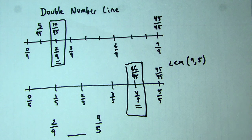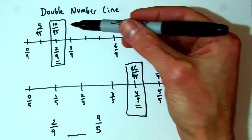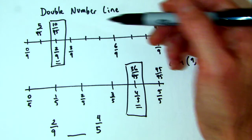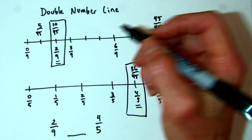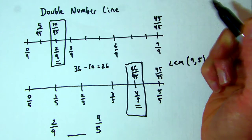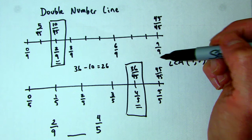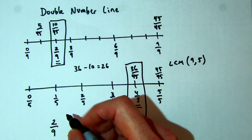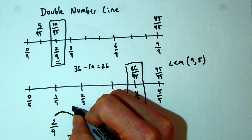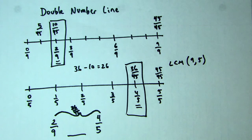Now I'm looking for what's halfway between 10/45 and 36/45. The difference between 10 and 36? We could say 36 minus 10 equals 26. So the difference is 26/45. This is the difference here, 26/45. So we just need to find the halfway point, and that is 13/45.